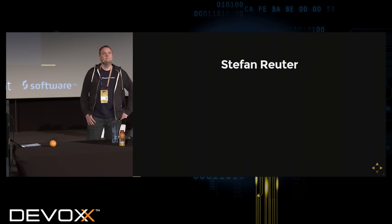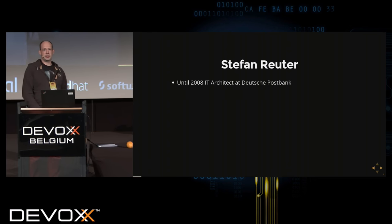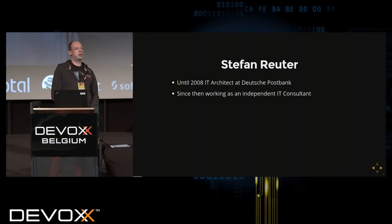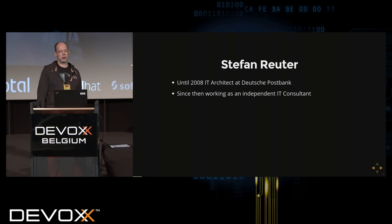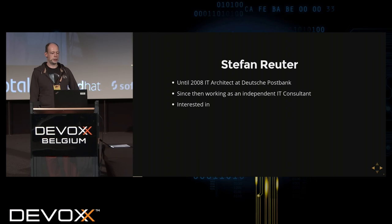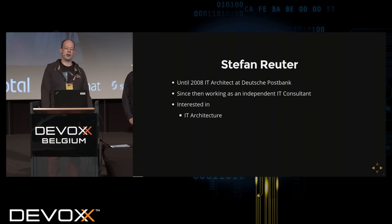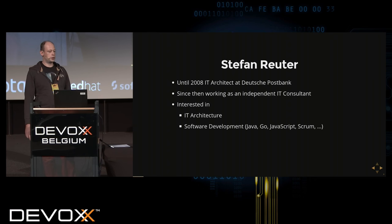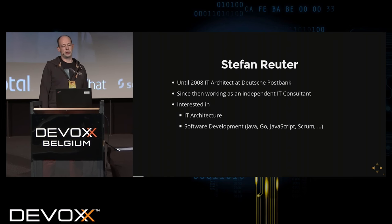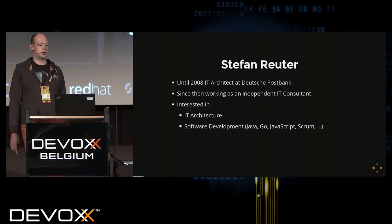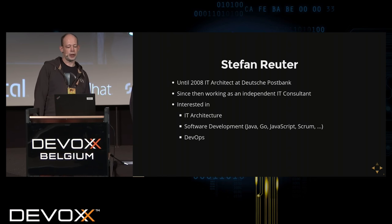Thank you for joining us. My name is Stefan Reuter and I've worked as an IT architect for Deutsche Postbank until 2008, and since then have been working as an independent IT consultant on projects where authentication and authorization were always a high priority. My basic interests are in IT architecture, software development using multiple languages — mainly Java and recently JavaScript and Go — and consulting on development practices like Scrum and DevOps.